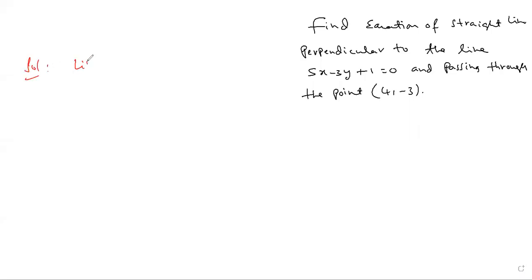Observe this solution: line perpendicular to 5x minus 3y plus 1 equal to 0. Observe clearly how to write a perpendicular line. First, interchange x and y coefficients.